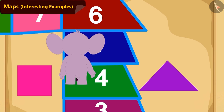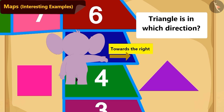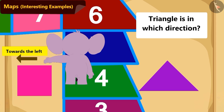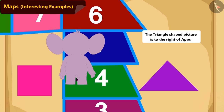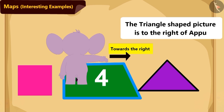Children, can you tell whether the triangular shaped picture is to Appu's right or to his left? Absolutely correct! The triangular shaped picture is at Appu's right side.